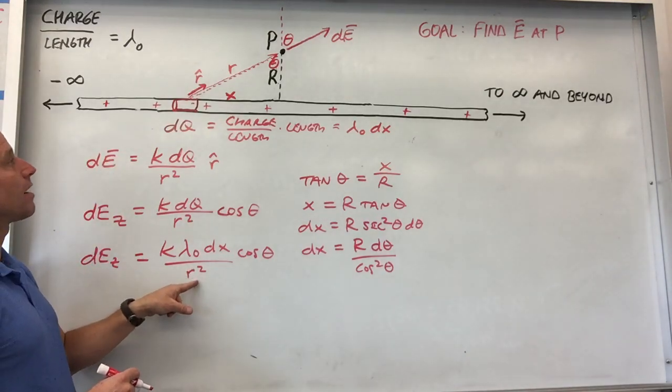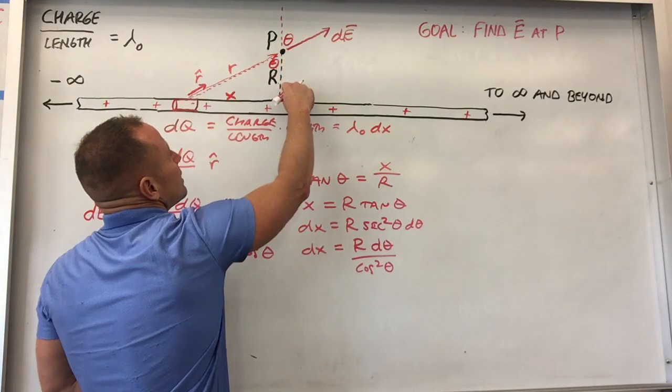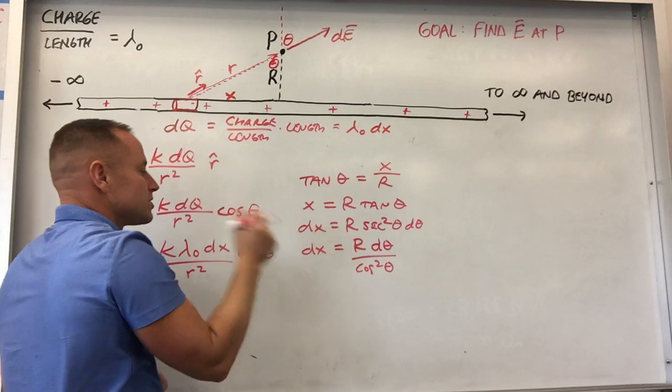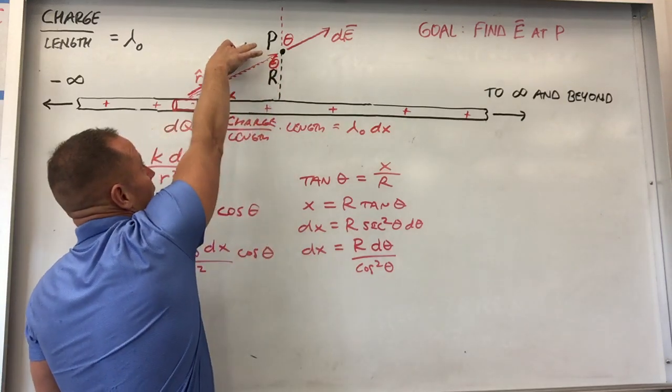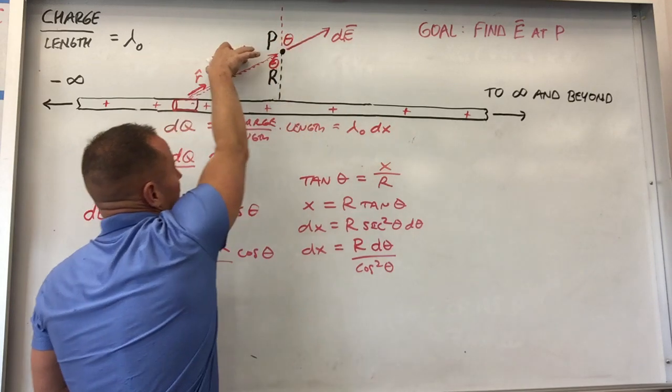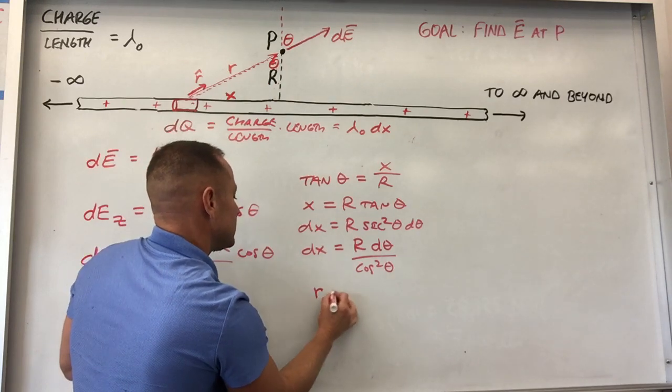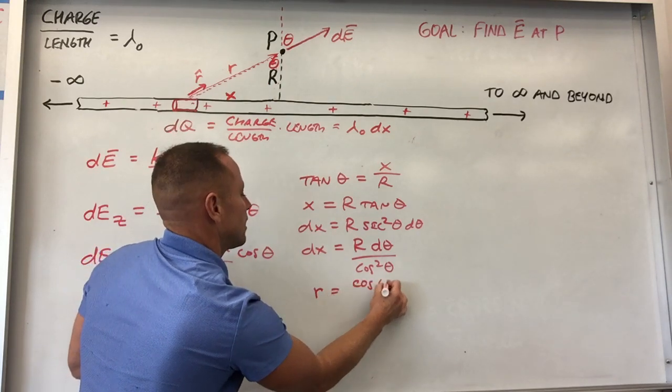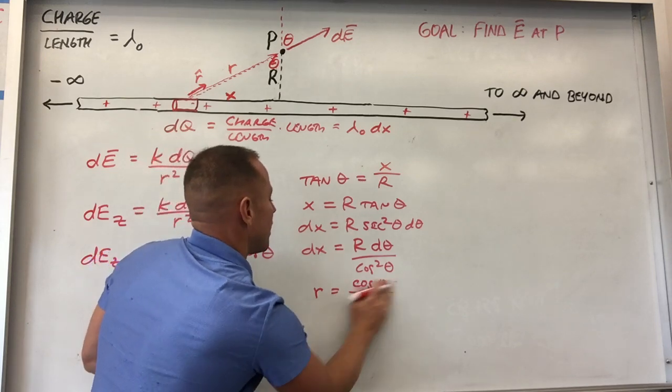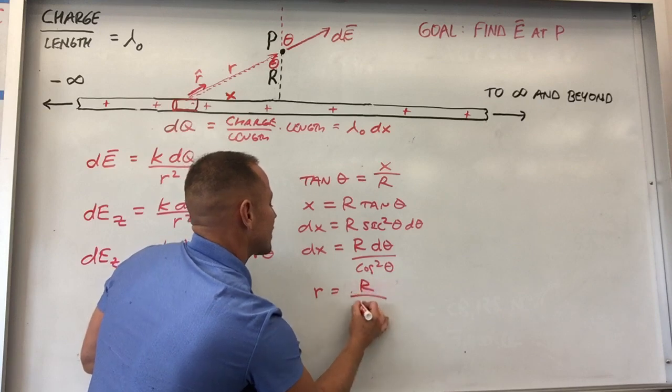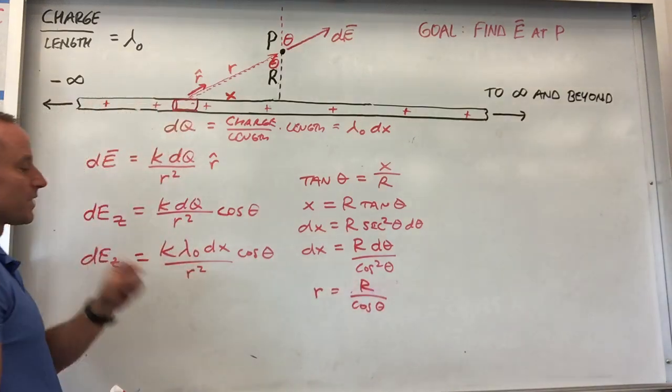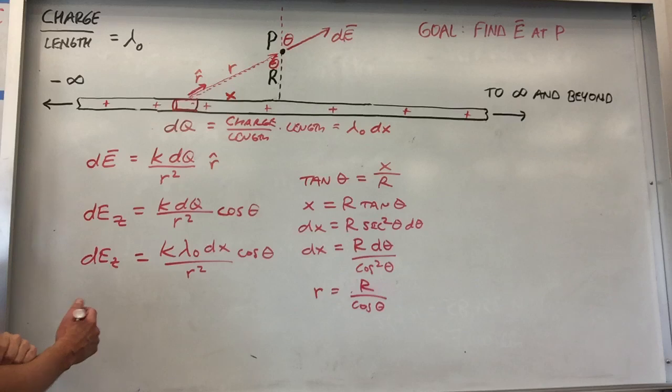That will take care of that. Now that's in terms of theta. Now let's get little R in terms of theta. And again, what we would prefer to do is not get it in terms of X, but get it in terms of this constant in theta. And so a way to do that is you can see that R times the cosine of theta is big R. R cosine theta is big R. So what that means is little R is big R over cosine theta. Yes, because big R is little R cosine theta.